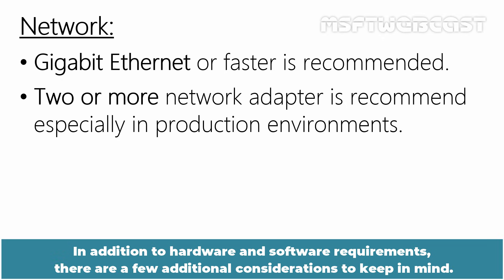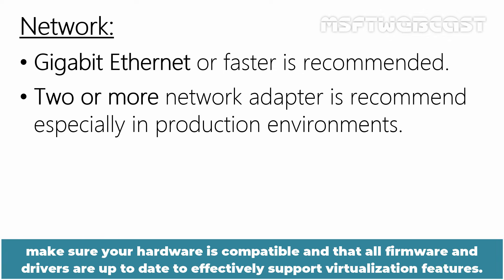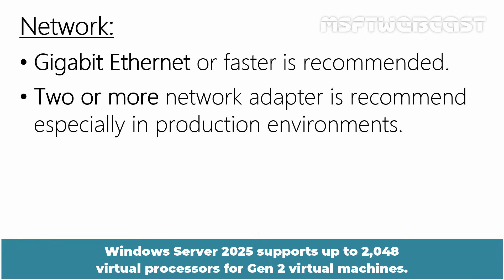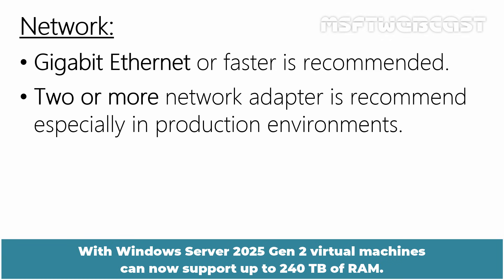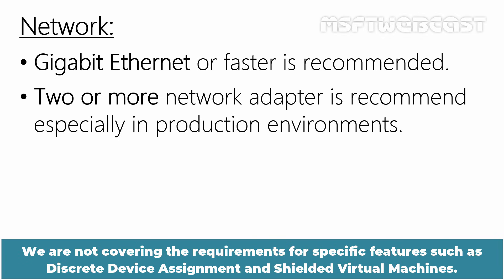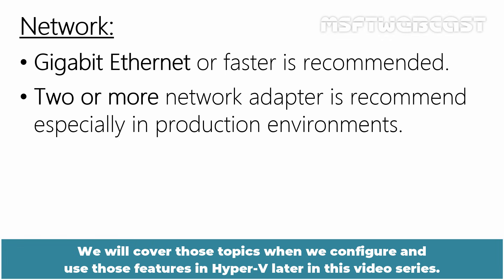In addition to hardware and software requirements, there are a few additional considerations to keep in mind. Before deploying Hyper-V, make sure your hardware is compatible and that all firmware and drivers are up to date to effectively support virtualization features. Windows Server 2025 supports up to 2048 virtual processors for Gen2 virtual machines, and Gen2 virtual machines can now support up to 240TB of RAM. We are not covering the requirements for specific features such as discrete device assignment and shielded virtual machines — we will cover those topics when we configure and use those features in Hyper-V later in this video series.